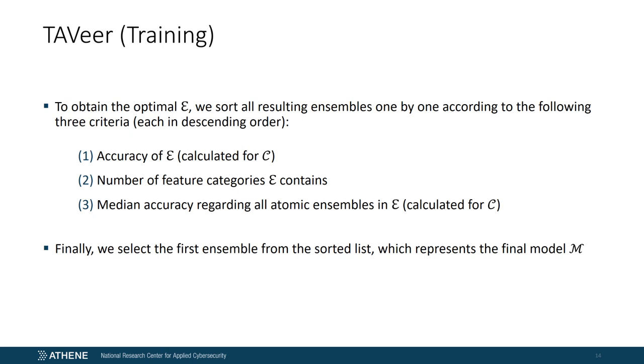Now that all aggregated similarity values have been calculated for all ensembles, the question arises which one should be chosen as the final model M. One idea is to select the ensemble with the maximum accuracy. However, in practice it can happen that there is not only one maximum value. In other words, several optimal ensembles may exist. To find a suitable one, we therefore follow a different approach, in which we sort all ensembles in descending order according to the following three criteria. First, we sort all ensembles by their calculated accuracies, then by the number of feature categories each ensemble comprises, and afterwards by the median accuracy with respect to all atomic ensembles contained in each ensemble. Finally, we select the first ensemble from the sorted list and define it as the final model M.